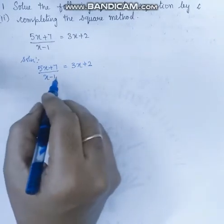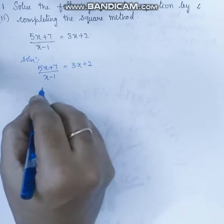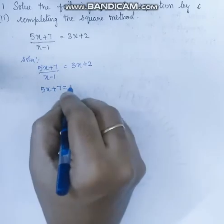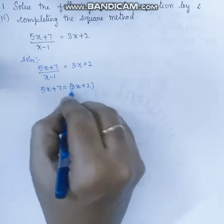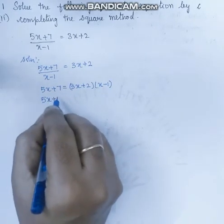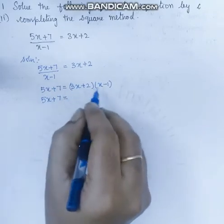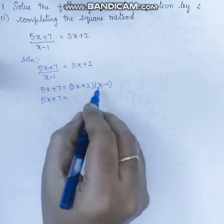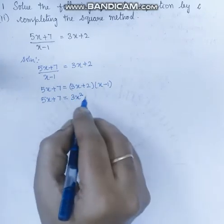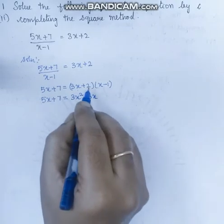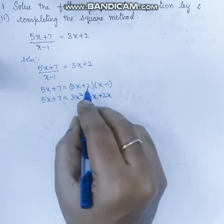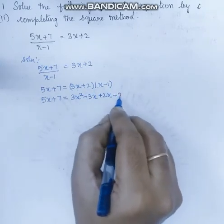So now we cross multiply. 5x plus 7 is equal to 3x plus 2 into x minus 1. Now we expand using identity multiplication: 3x into x gives 3x square, 3x into minus 1 gives minus 3x, 2 into x gives plus 2x, and 2 into minus 1 gives minus 2.